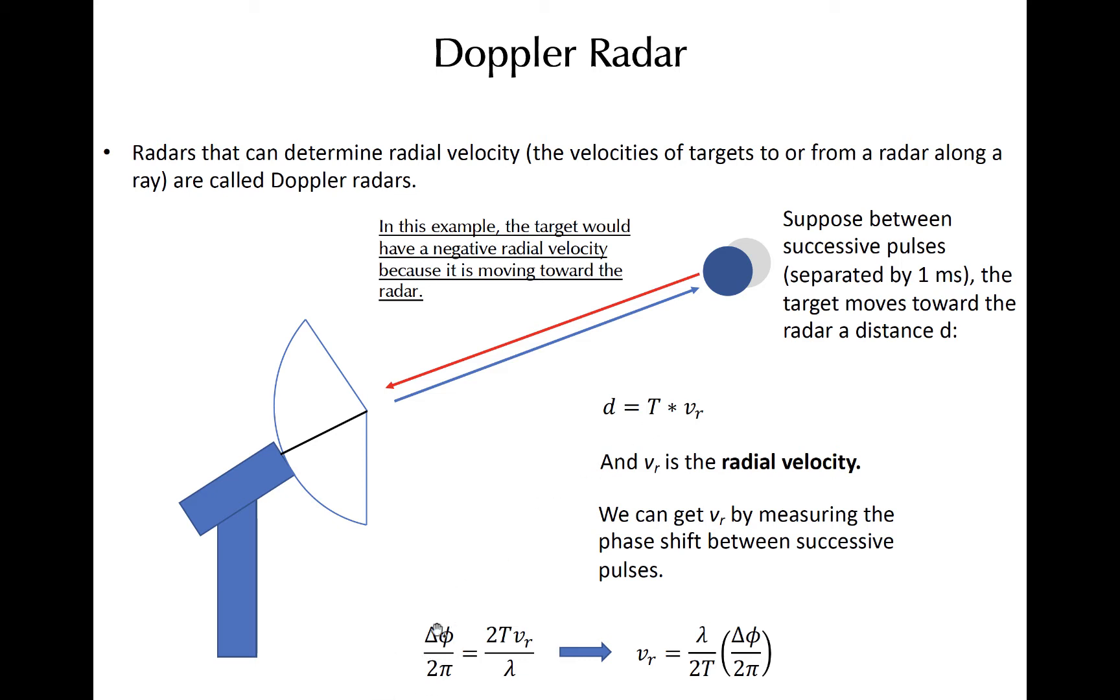The phase shift is characterized by the fraction of the distance traveled by radiation relative to its wavelength. Consider that transmitted radiation must travel to and from the target, thus the 2 appears in the numerator in this equation. Simple algebra then yields an equation for radial velocity that is a function of the phase shift given some pulse period is fixed and the wavelength of radiation transmitted.